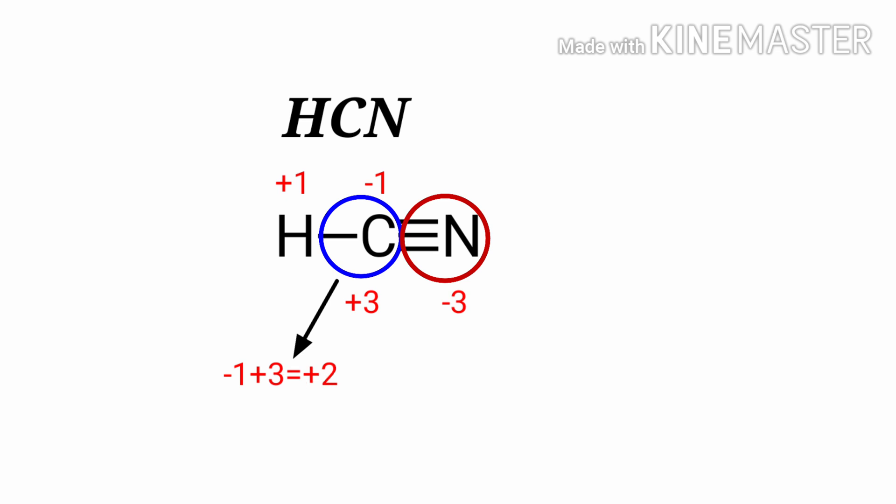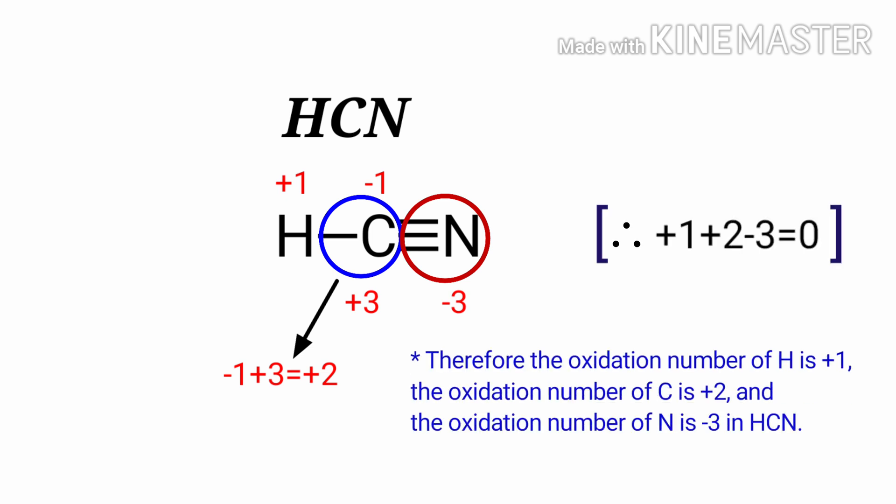So the average oxidation number of carbon is minus 1 plus 3, that is plus 2. Therefore, the oxidation number of hydrogen is plus 1, the oxidation number of carbon is plus 2, and the oxidation number of nitrogen is minus 3 in hydrogen cyanide.